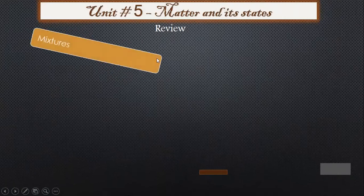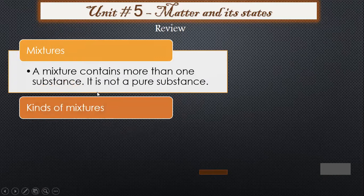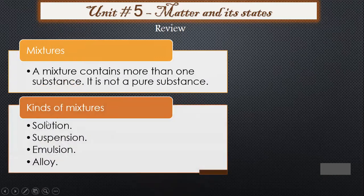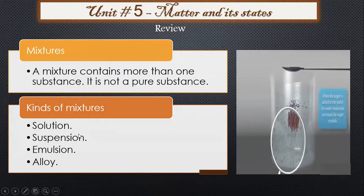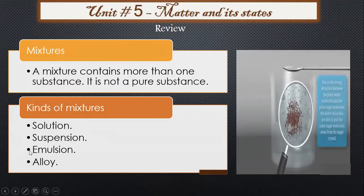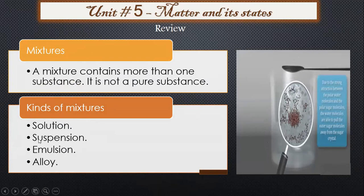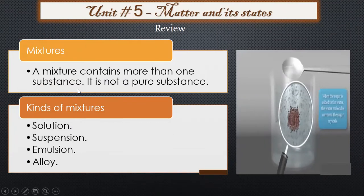Now, about mixtures: a mixture contains more than one substance — it is not a pure substance. Kinds of mixtures are solution, suspension, emulsion, and alloy. A solution is when the solute completely dissolves into the solvent. A suspension is when the solute does not dissolve in the solvent. An emulsion is a mixture of two liquids that cannot be mixed properly. An alloy is a mixture of two metals mixed together to make another metal.